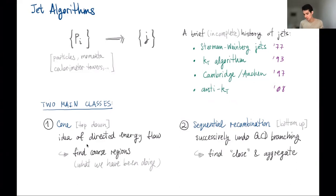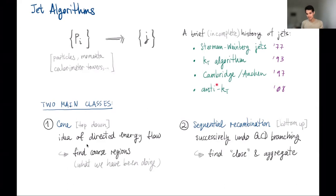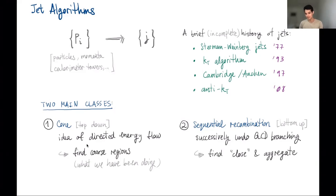Up to this point, theoretically well-motivated jet algorithms like kT and Cambridge had not been adopted for hadron colliders. The Tevatron jet measurements were largely based on cone-type algorithms, which turn out to have issues with infrared sensitivity. It was really the anti-kT algorithm that finally resolved the problems on the experimental side, and these days every single jet measurement is basically done using anti-kT.